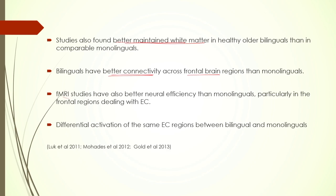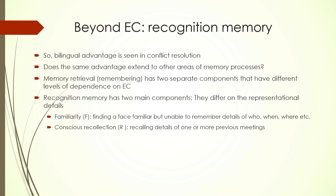fMRI studies have pointed to better neural efficiency in bilinguals than monolinguals, particularly in the frontal regions dealing with executive control. Even when monolinguals show some activation in the executive control region, it is still not comparable to bilinguals. In terms of the neural signature of bilingualism, there are differences at all levels: structural level in terms of white matter maintenance, and functional level with higher activation leading to better connectivity in the frontal cortical region.